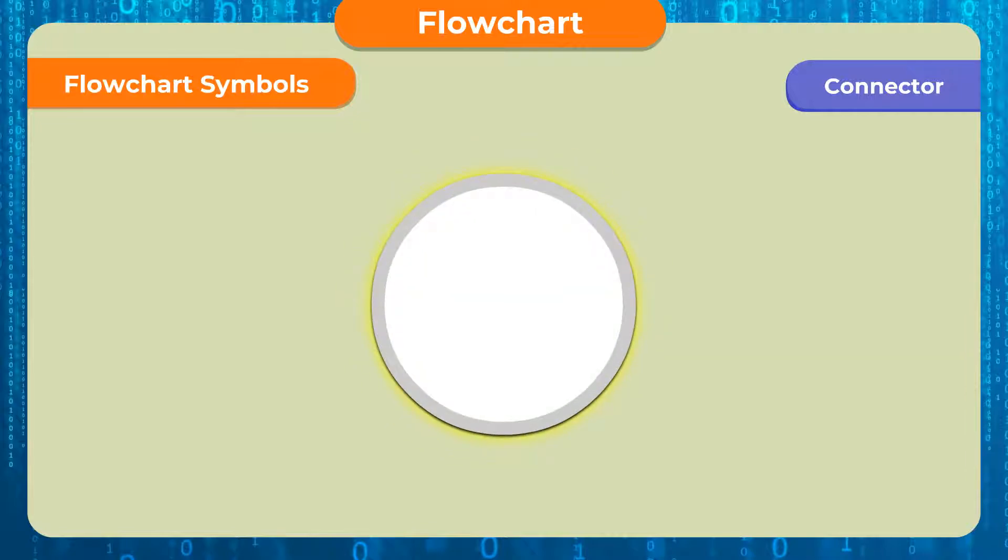Connector. Connector is circular in shape which is used to connect two statements situated at different places in a program. This is very useful to show the connection of different parts of a flowchart made on different pages.